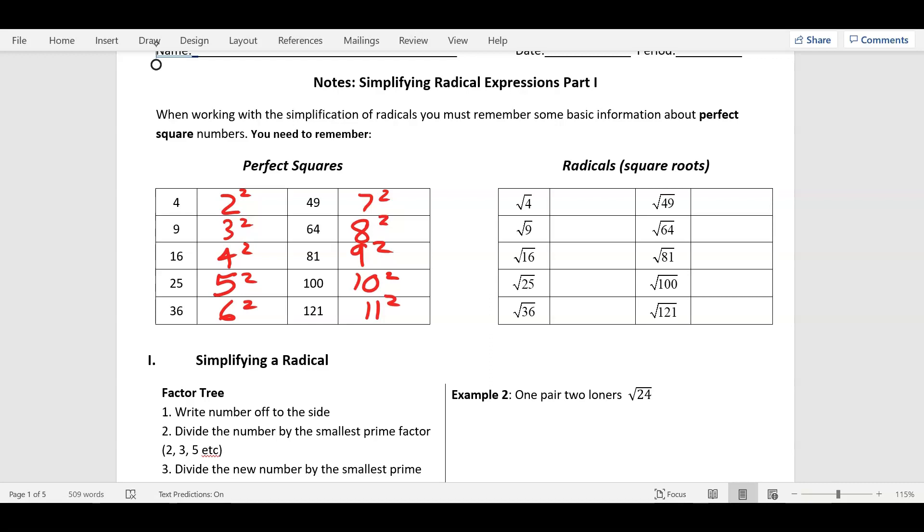So working backwards from a square to the number that you squared is called square rooting. That's what radicals are, square roots. So the square root of four is what times what is four? Two. Square root of four is two because two times itself is four. That's the relationship between square numbers and square roots. Square root of nine, what times what is nine? Three. You get the idea, and it's all the way down. Same thing.